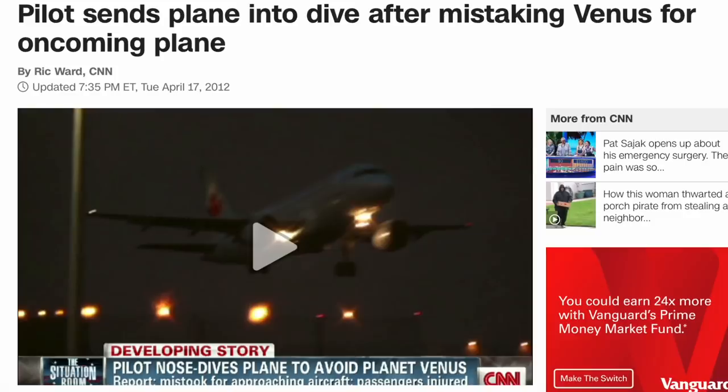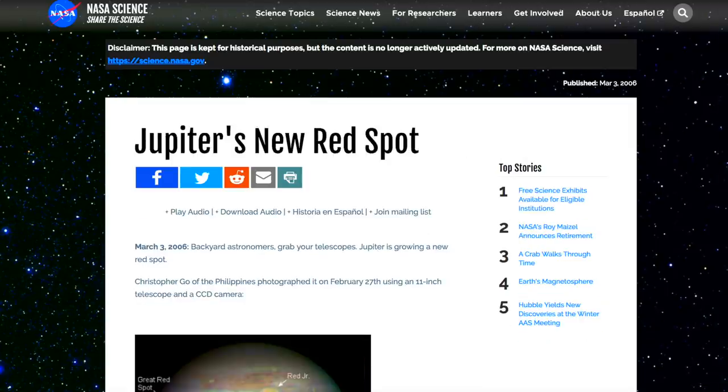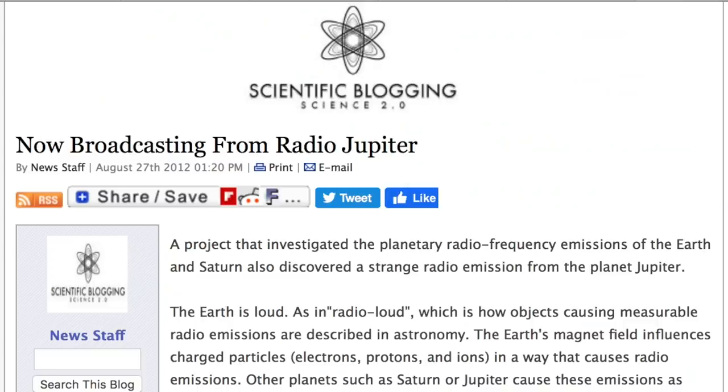But the planet that has changed the most is Jupiter. The atmosphere has changed there more than Saturn, Venus, and Uranus combined. And most importantly, its radio signal is changing, something never seen before and that is wholly produced by its magnetic field and resulting radiation belts.